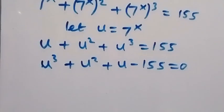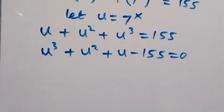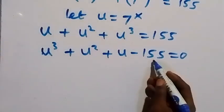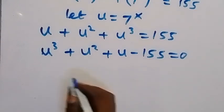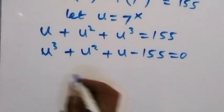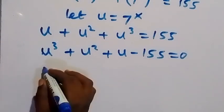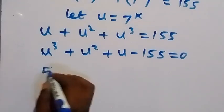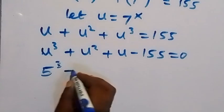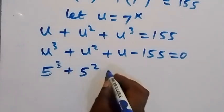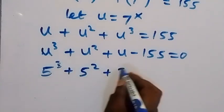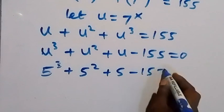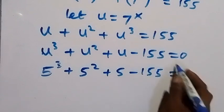Then we can check for one of the roots of this polynomial by inspection. One of the factors of 155 is 5. So let's put 5 here and see whether we are going to have equal to 0. So 5 cubed plus 5 squared plus 5 minus 155 — will this be equal to 0?